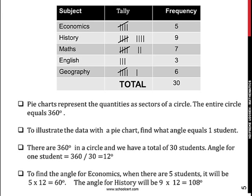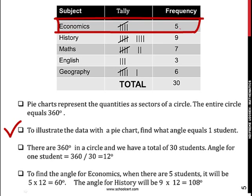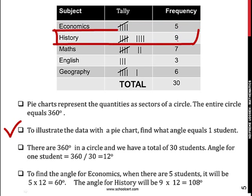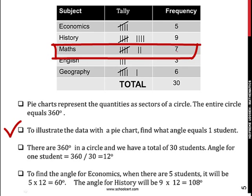The second part of the question had said we should construct a pie chart. A pie chart usually represents the quantities as sectors in a circle, and the entire circle equals 360 degrees. To therefore illustrate the above data with a pie chart, we find out what angle equals one student. Remember, we have the subject and we have the frequency, in other words, the number of students for every subject.